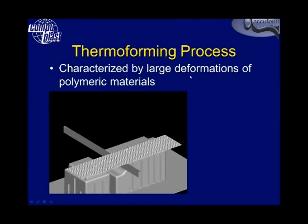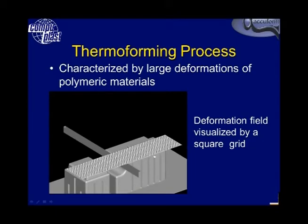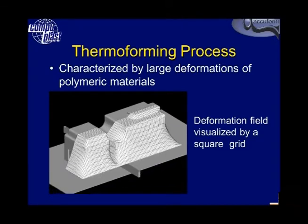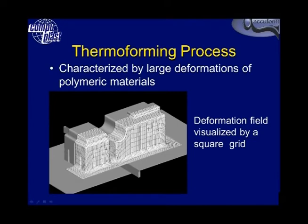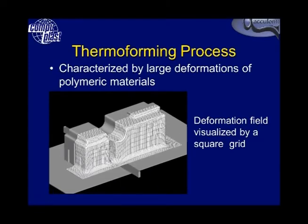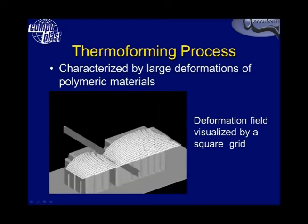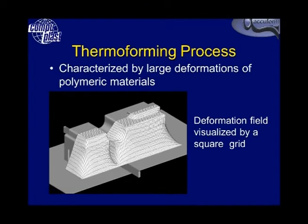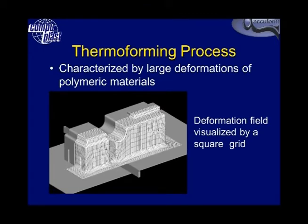The thermoforming process is characterized by large deformations of polymeric materials, as you can see here in this animation. There is a grid placed on a sheet and you'll see it inflating first, the tool moving into the sheet, and then the vacuum pulling the sheet down. Originally the grid starts with uniform squares and then you can see that they get extended and distorted and become essentially some form of quadrilateral. This deformation results in a thickness change throughout the part, and this is what we're looking to analyze.